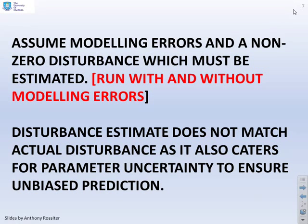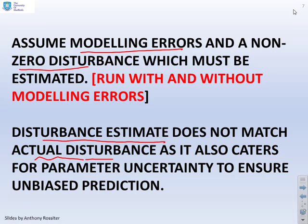We're going to assume some modeling errors, so we've got some parameter uncertainty and a non-zero disturbance which must be estimated, and we're going to run some simulations and see how things work. What you will notice in particular is the disturbance estimate will not match the actual disturbance, because the disturbance estimate will also cater for the parameter uncertainty in order to ensure unbiased prediction.